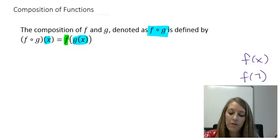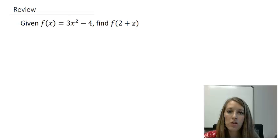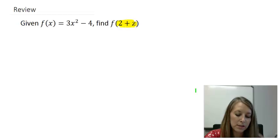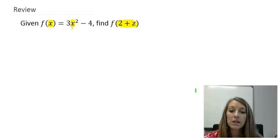Now before we get into a new example of this using some of this new notation, let's go back and I want to show you that you actually are already doing this. So, we defined f of x in this example to be 3x squared minus 4. If we want to find f of 2 plus z, then what we do is we take this 2 plus z and we plug it in for every place that we see an x. So basically, you are composing functions here. You just didn't know that you were doing it and we just weren't using the official notation.